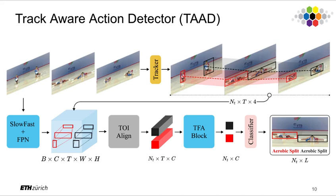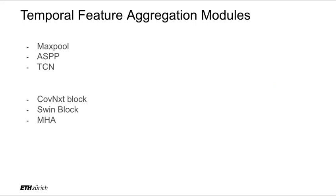A track-of-interest alignment operation extracts per-track features into an array. Next, a temporal feature aggregation module aggregates the features along the temporal dimension and passes them to a classifier for action labeling. We tried various temporal feature aggregation modules — some of them worked, while others did not result in stable training.